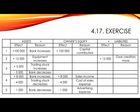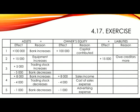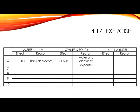Number 6. Paid water and electricity account. Again, we have paid, therefore bank will be one of the accounts. In assets, we will show minus 1,500 as bank decreases. The other account involved is water and electricity expense. Since it is an expense, our equity will decrease by 1,500 Rand.